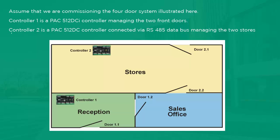For this demonstration, we will assume that we are configuring this four-door system. Controller 1 is the PAC512IP controller managing the two front doors. Controller 2 is a PAC512IP controller connected via RS485 data bus managing the two store doors.